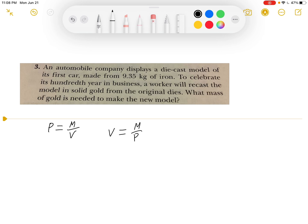So to find the volume of the model, we have mass is 9.35 kg over the density, which is the density of iron. So the density of iron will be 7.86 times 10 to the 3rd power kg per cubic meter.